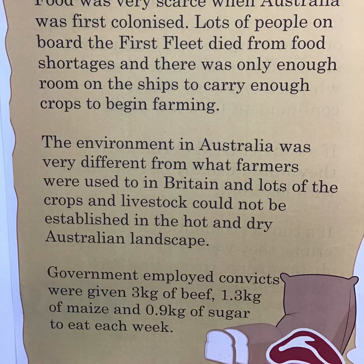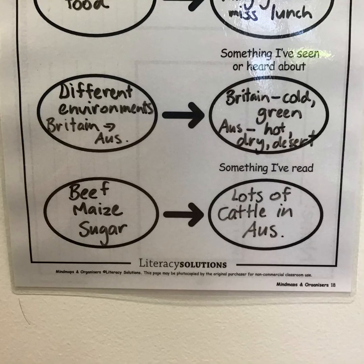Government employed convicts were given three kilograms of beef, 1.3 kilograms of maize — which is like flour — and 0.9 kilograms of sugar to eat each week. Wow, that is a lot of sugar! I've put in the graphic organiser that the convicts were eating beef, maize and sugar. A connection I've made is that there were lots of cattle in Australia, which would explain why the convicts had a lot of beef to eat.